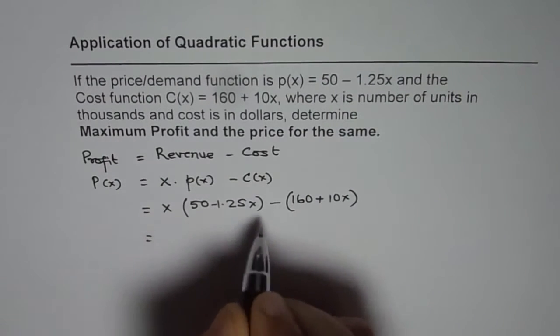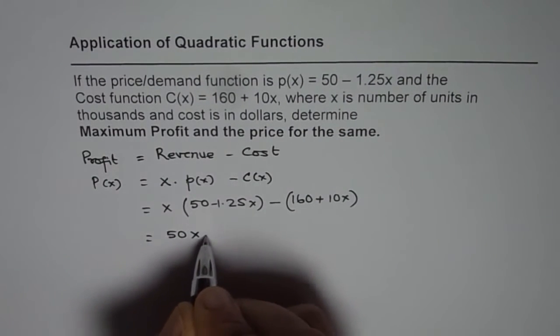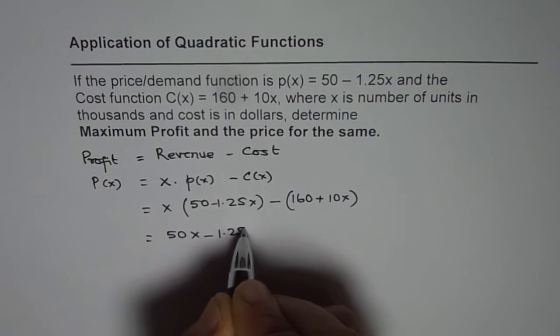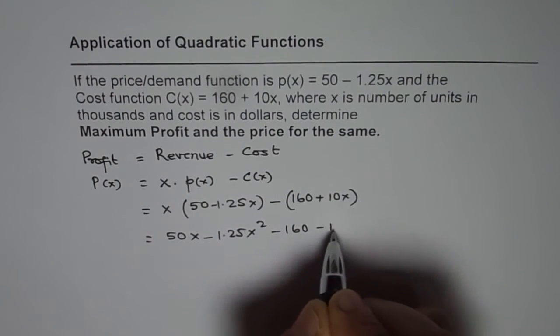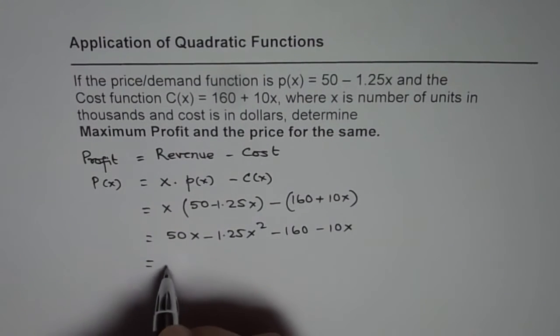Let's expand and simplify. We get 50x minus 1.25x squared minus 160 minus 10x.